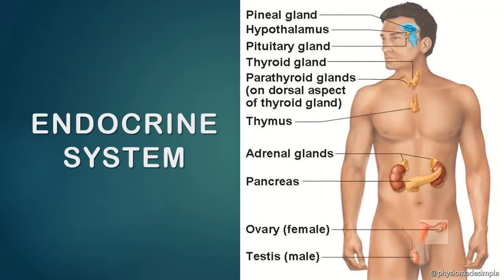Moving on to the next system, that is the endocrine system. The endocrine system is a group of endocrine glands comprising the system. Endocrine glands are ductless glands. Exocrine glands are a group of glands in the digestive system — those are ducted glands.